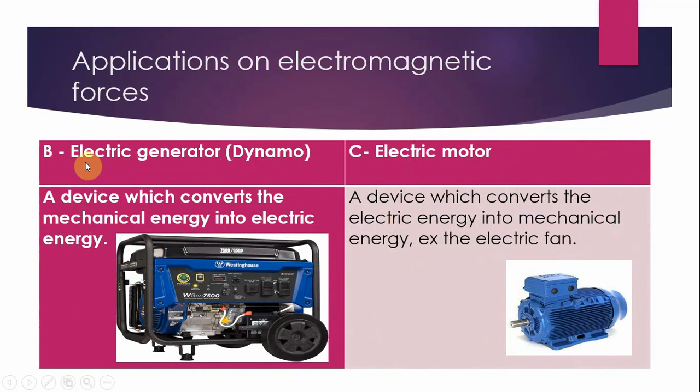Which are electric generator and the electric motor. The difference between the dynamo and the motor: the dynamo or the generator converts the kinetic or mechanical energy into electric energy, while the motor converts the electric energy into mechanical energy.